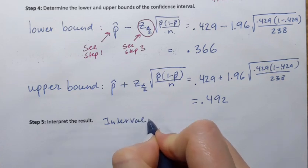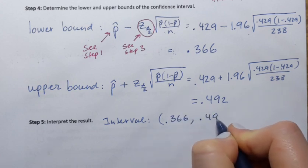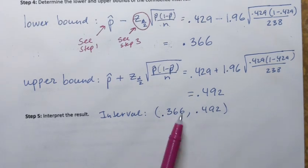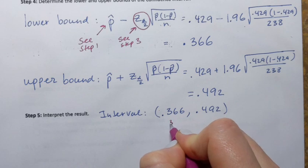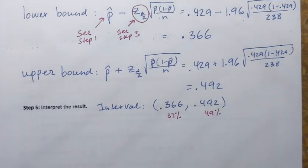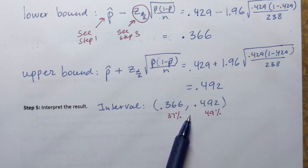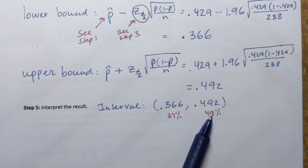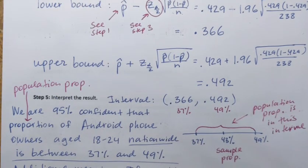The interval we obtained goes from 0.366 to 0.492. Converting to percentages, that's approximately 37 percent to 49 percent. We don't know what the population proportion is exactly; however, we're 95 percent confident that the population proportion of Android phone owners aged 18 through 24 is somewhere in that interval, between 37 and 49 percent.